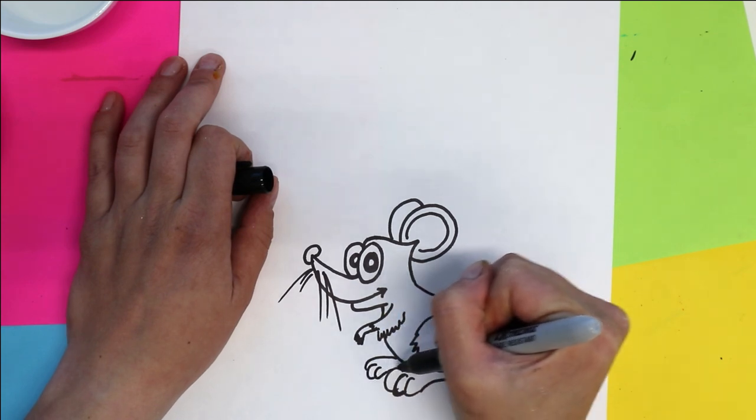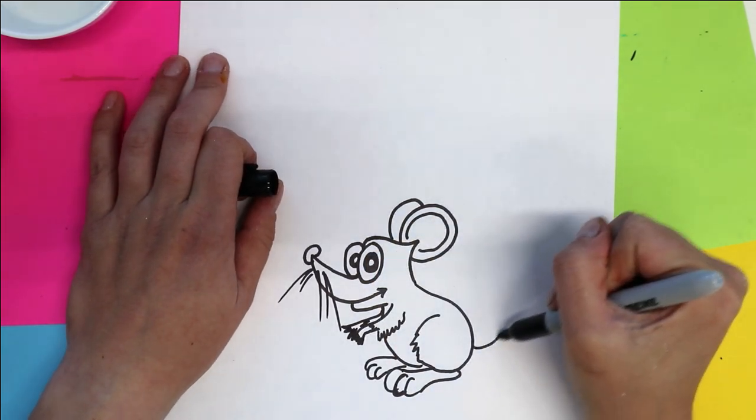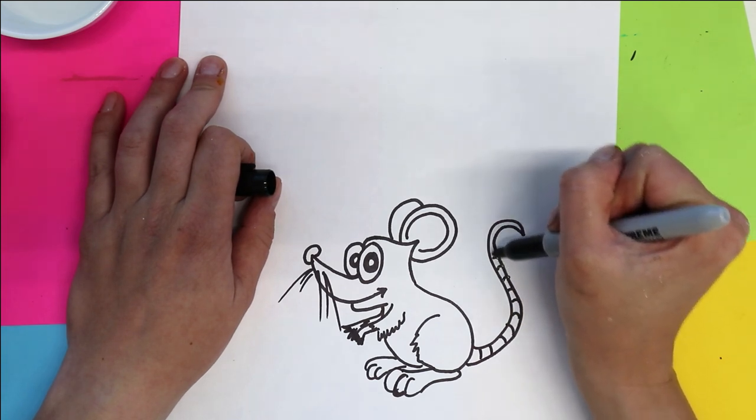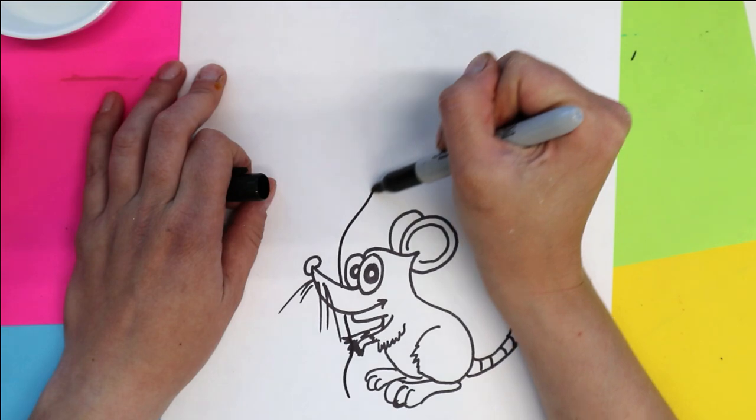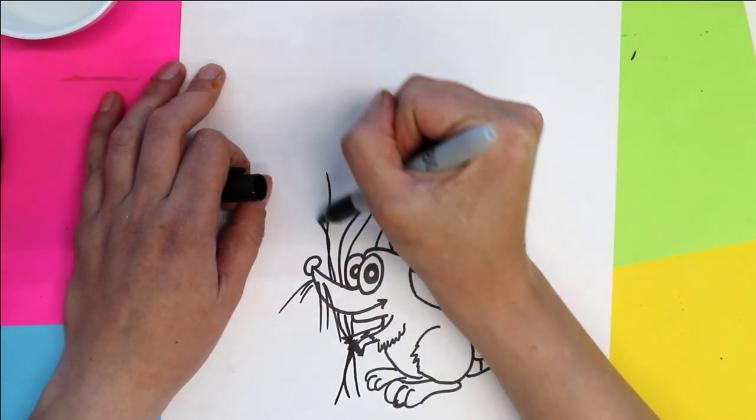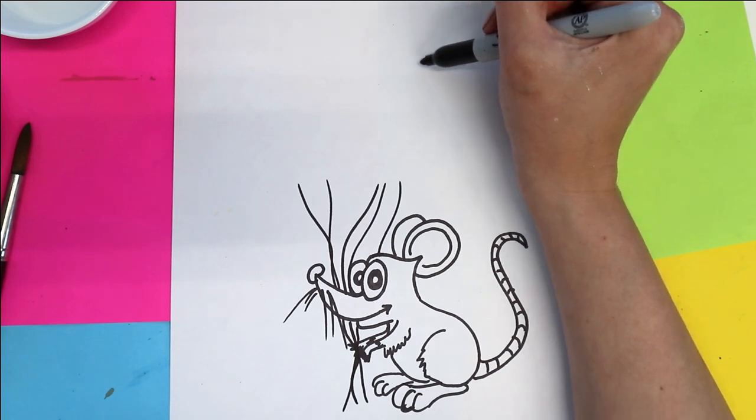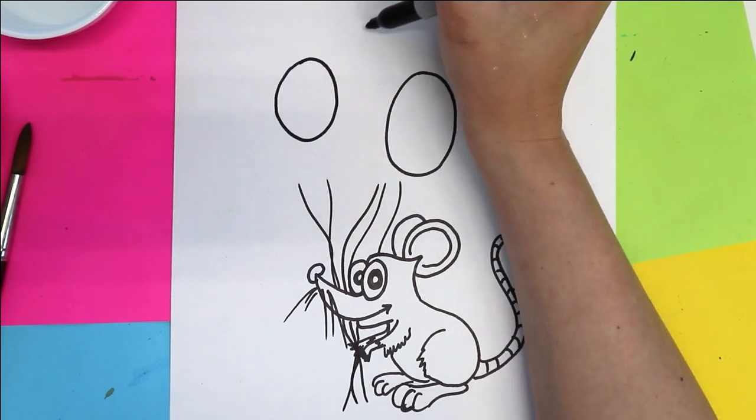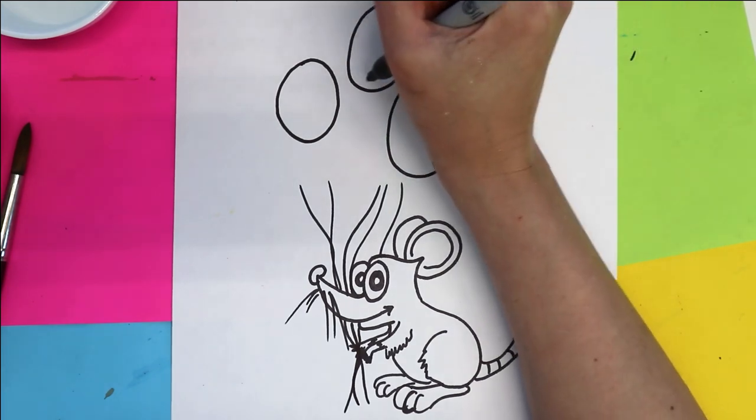Now you also want to add some limbs and feet in the behind and a tail. Okay now we're ready to add some strings and these are going to lead up to some balloons. Okay I'm gonna before I finish off these strings I'm gonna draw some balloons so I'm going to lay out the primary color balloons.